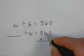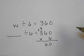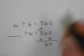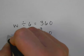0 times 6 is 0. 6 times 6 is 36. 6 times 3 is 18. Plus 3 is 21. So 2160 would go in this blank.